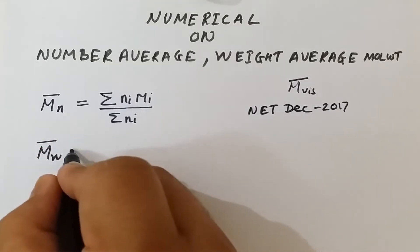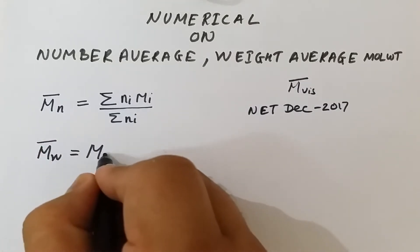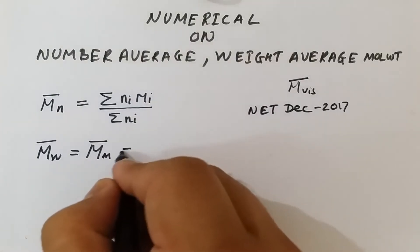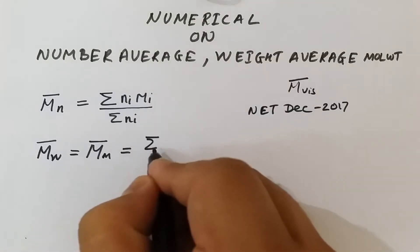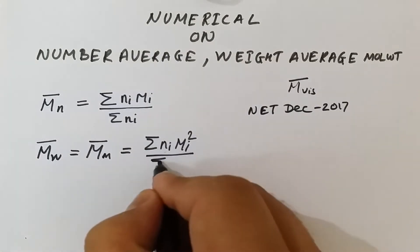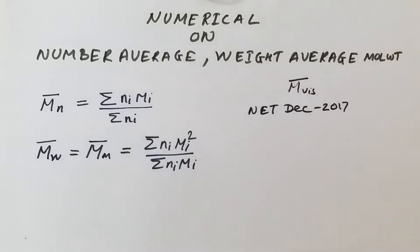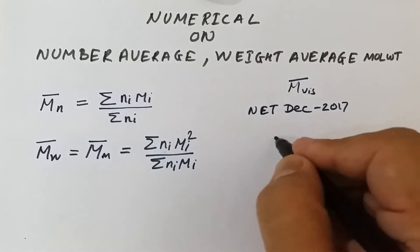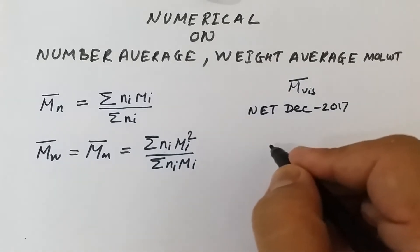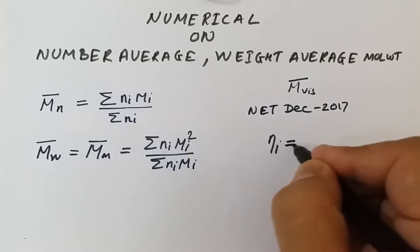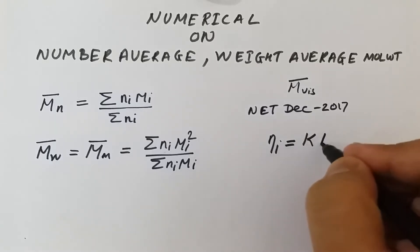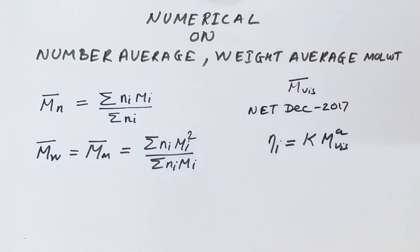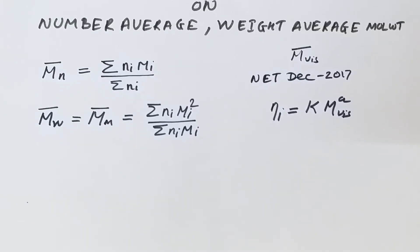For weight average molecular weight — also called mass average molecular weight in many books — the formula is summation of Ni·Mi² divided by summation of Ni·Mi. The third type is viscosity average molecular weight, given by the Mark-Houwink relation: intrinsic viscosity [η] = k·M raised to the power a.